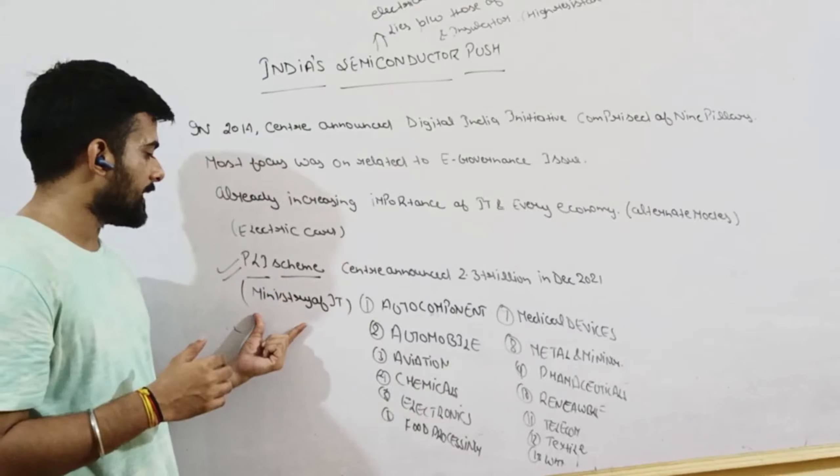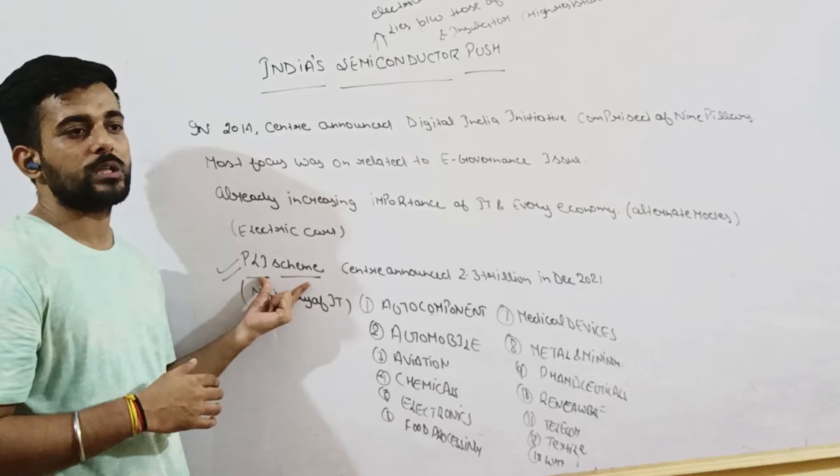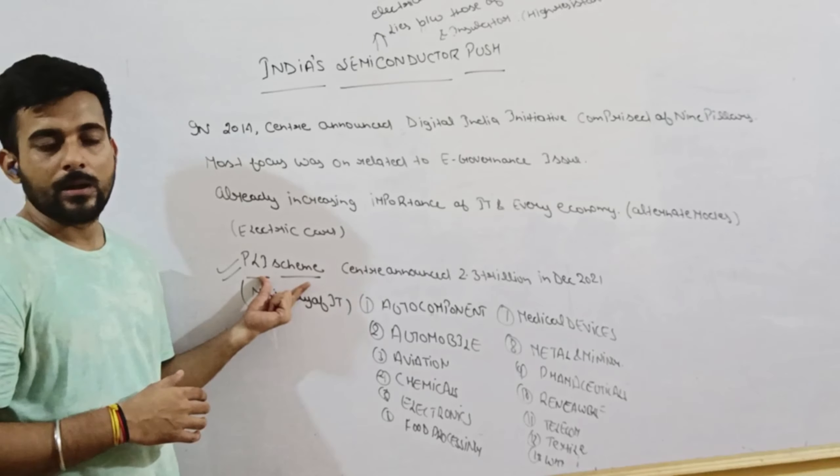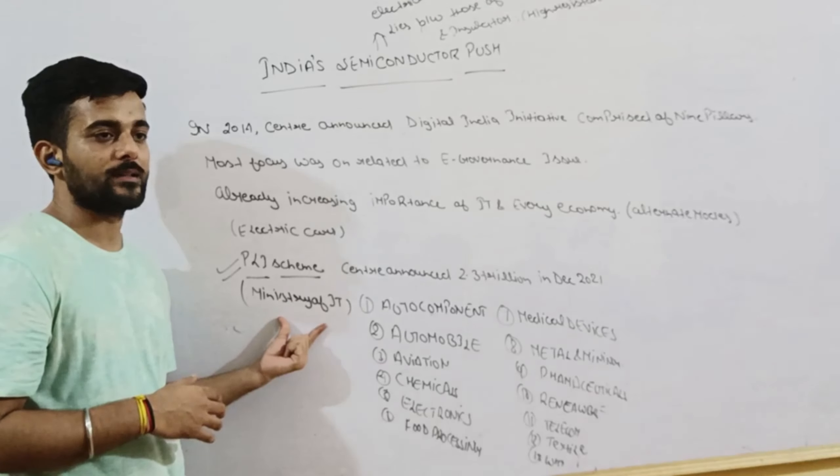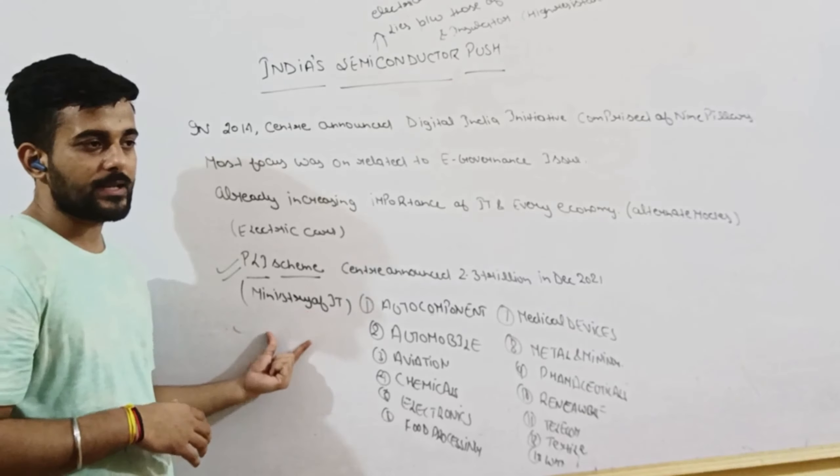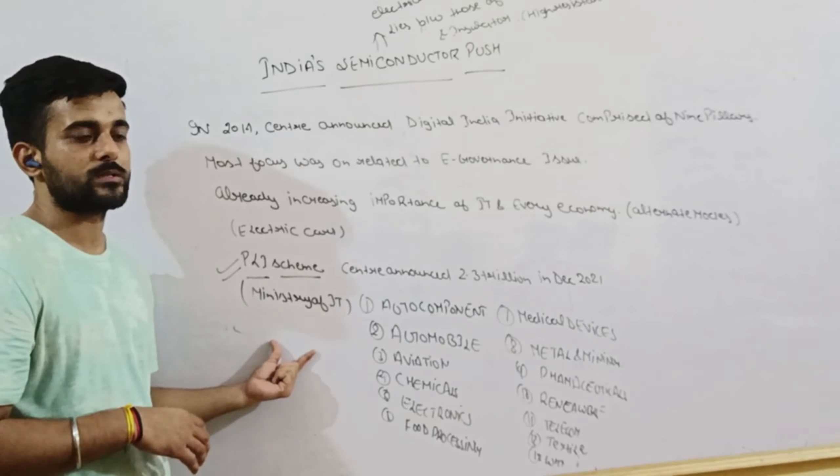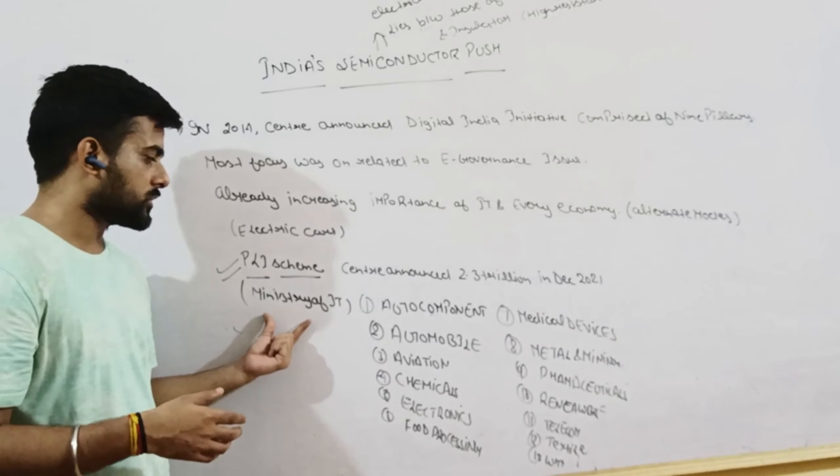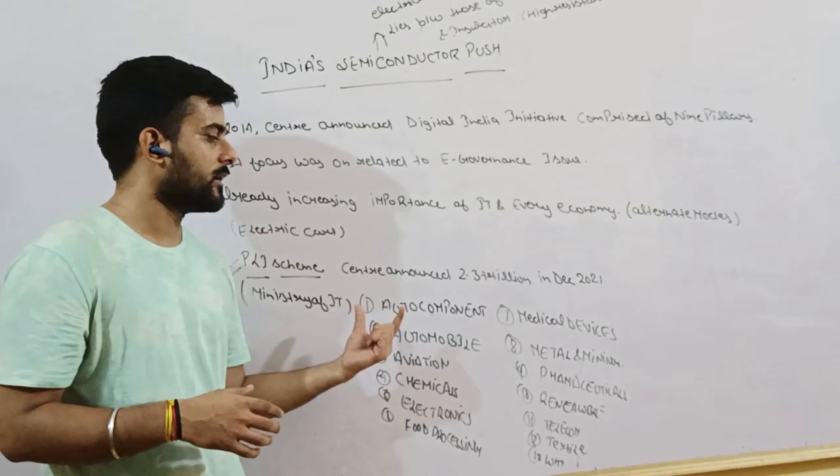Now how can you do this? You can do this through one scheme. What is the PLI scheme? What is Production Linked Incentives? The Production Linked Incentives is from the Ministry of IT, Information and Technology. Now you can understand this. One is the Ministry of Consumer Affairs.